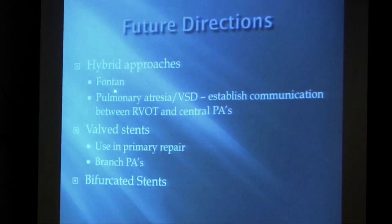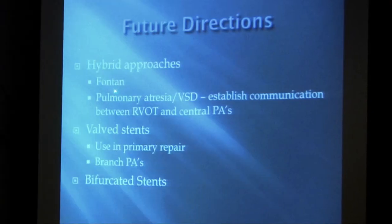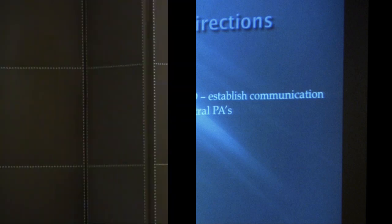In terms of future directions for stents, there's still much more to be done with hybrid approaches — either for Fontan completions or in the setting of pulmonary atresia with VSD to establish communications between the right ventricle and the central pulmonary arteries. Valve stents could be used as primary repair rather than just relieving obstructions or replacing previously-operated valves. Valve stents could be placed within a stent in children and gradually expanded as they grow, placed in the branch pulmonary arteries as opposed to the right ventricular outflow tract, or bifurcated stents could be used. Thank you.